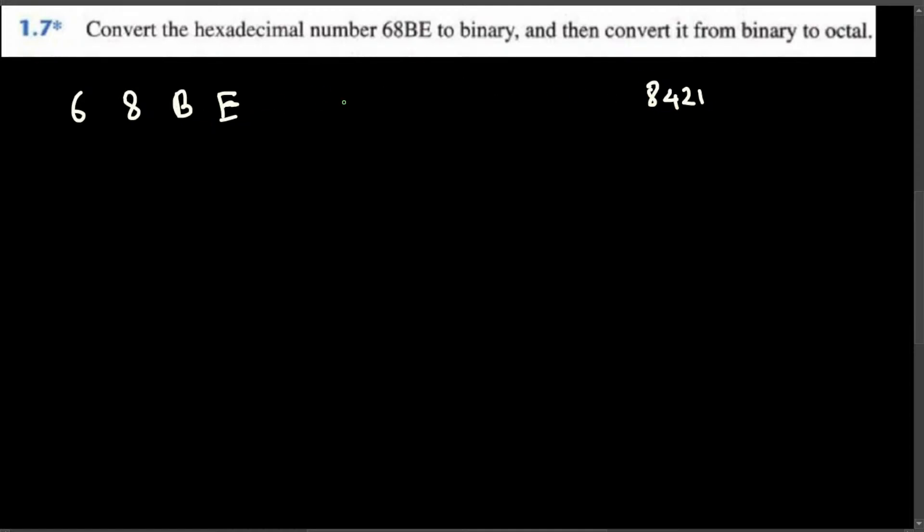Now if you apply 8421 to this, E is what? E in hexadecimal is 14. So if you put 1 in which numbers that will give you 14, we need 8 and a 4 and a 2 to make a 14, and others will become 0.